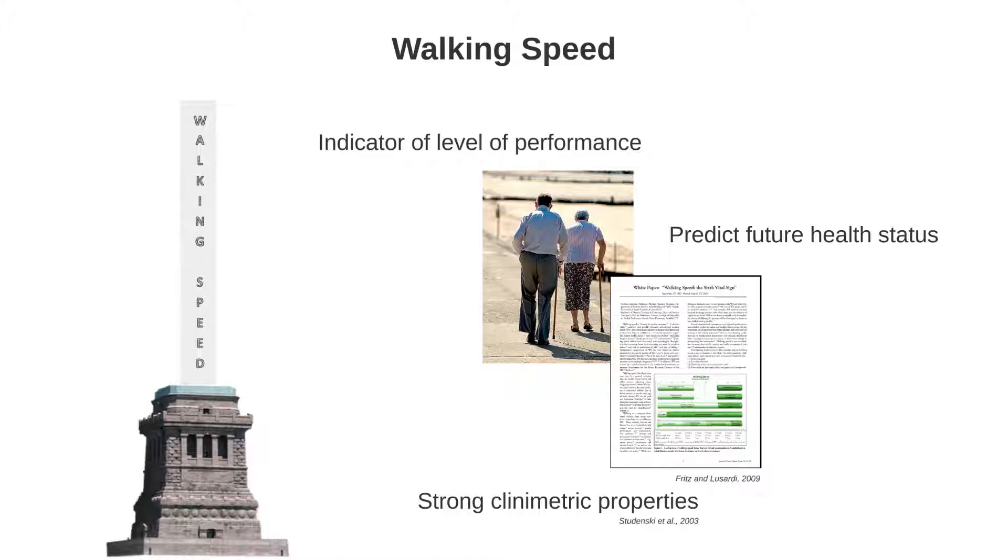For instance, in 2003, Stadinsky reported that walking speed in older adults is a clinically meaningful indicator of physical health status. Because of its strong clinometric properties to predict future health status and functional decline, walking speed has been associated with survival rates in community-dwelling adults age 65 years and older. In 2009, Fritz and Lissardi suggested that walking speed was the sixth vital sign of health, claiming it is one of the most important signs that indicate the status of the body's vital functions along with temperature and pulse.